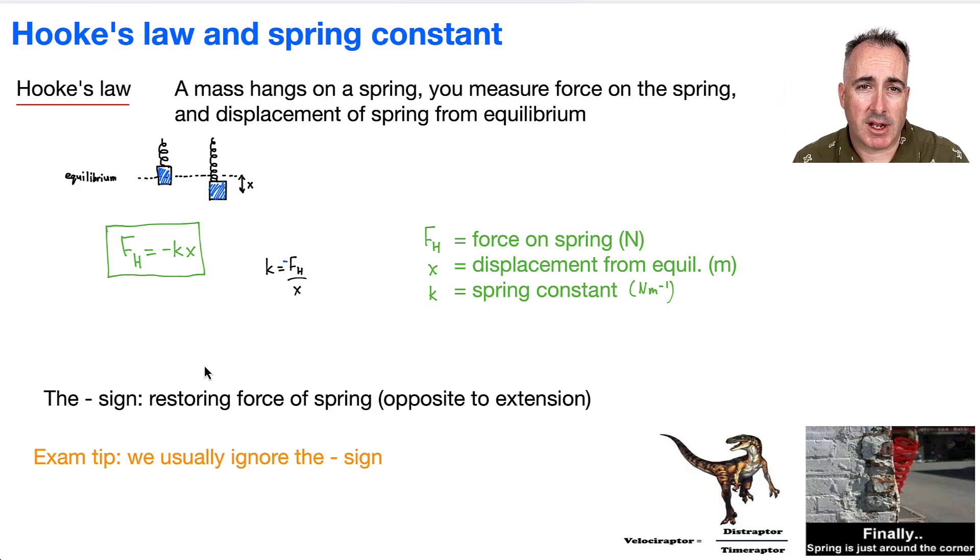Usually we ignore the sign, but it's important just to remember this. And keep in mind that with this spring constant, it's different for each spring. For example, a really stiff spring will have a higher spring constant, and a very easy-to-move spring will have a low spring constant. A large K gives you a stiff spring.